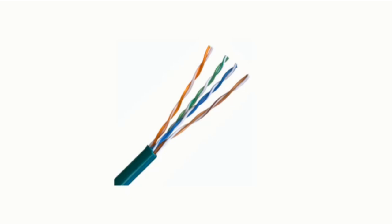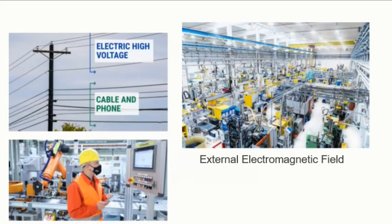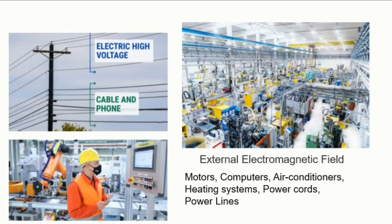Okay, so let's look at another disturbing effect that telephone lines and ethernet cables need to deal with, which is the external electromagnetic field. There are many examples of external sources of electromagnetic interferences that you can find at home or in industry, such as motors, computers, air conditioners, heating systems, power cords, power lines, etc.